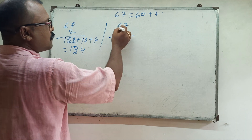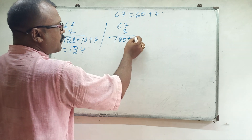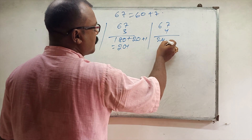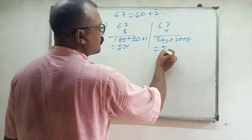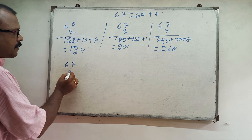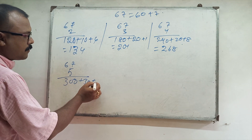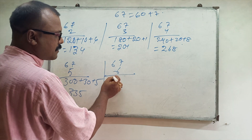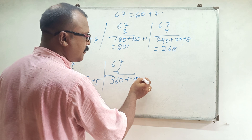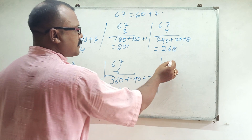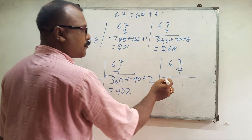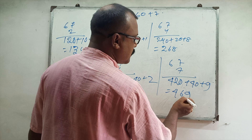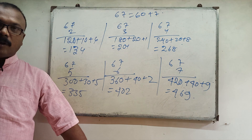67 threes: 60 threes are 180, 7 threes are 21, so 201. 67 fours: 240 plus 28, so 268. 67 fives: 335. 67 sixes: 360 plus 42, so 402. 67 sevens: 60 sevens are 420, 7 sevens are 49, so 469.